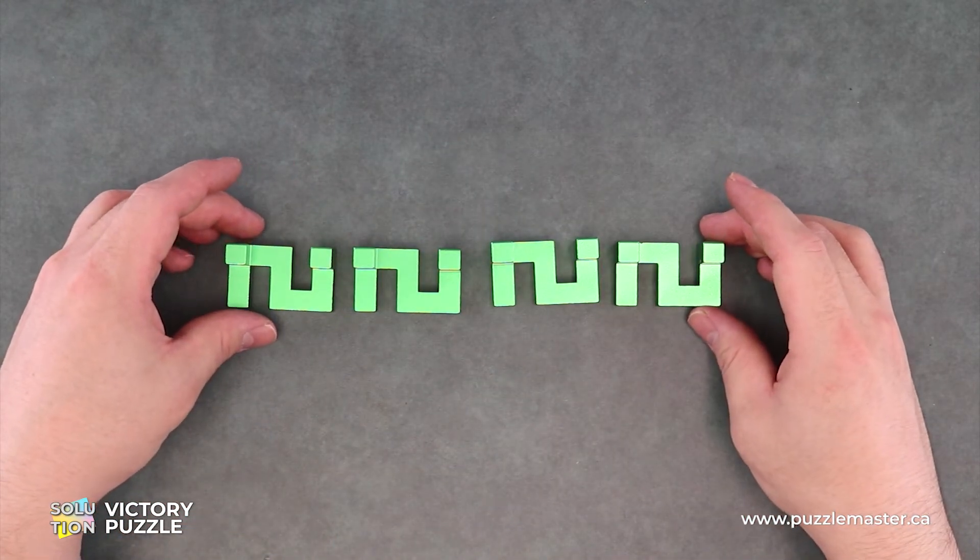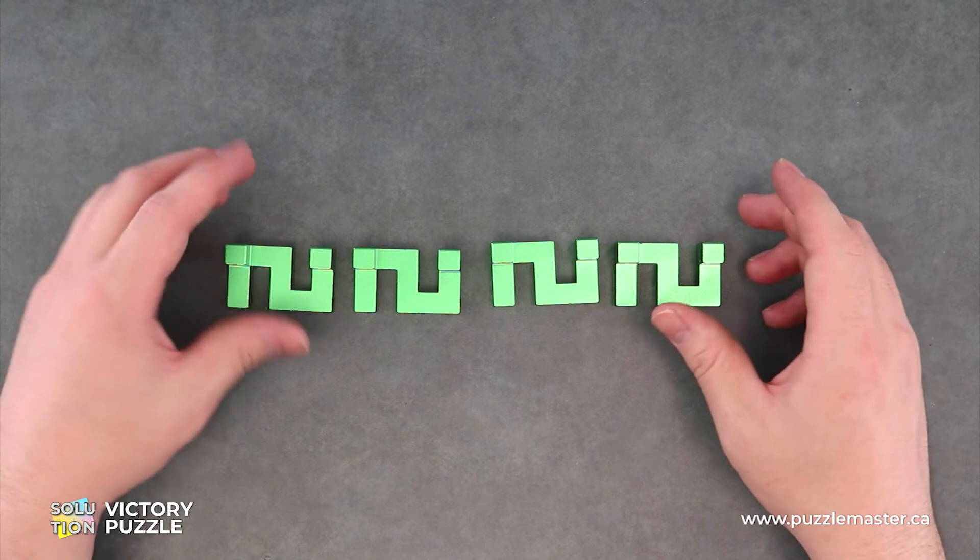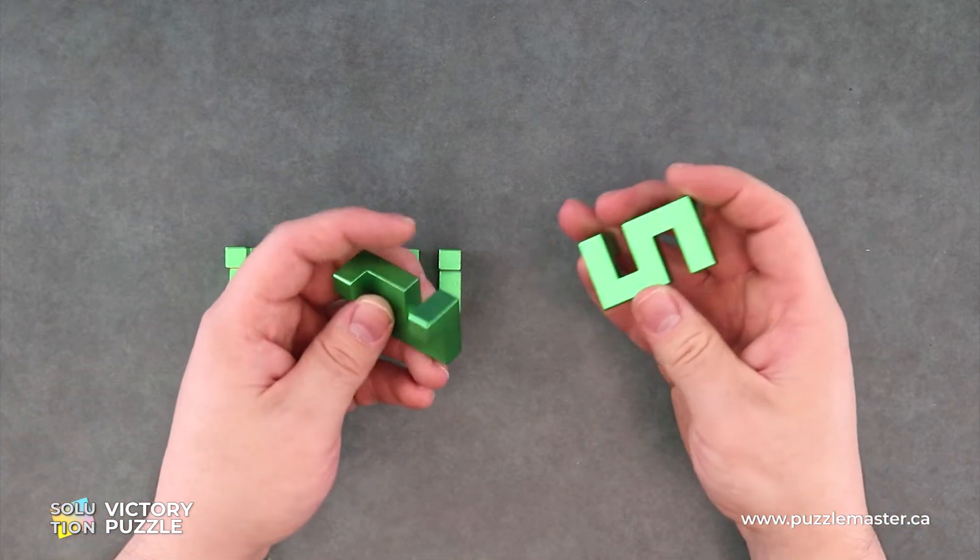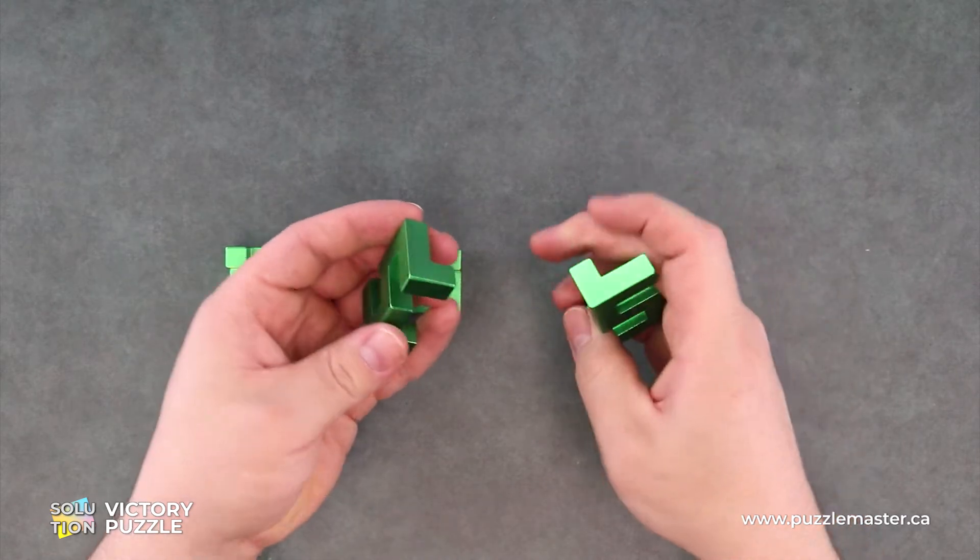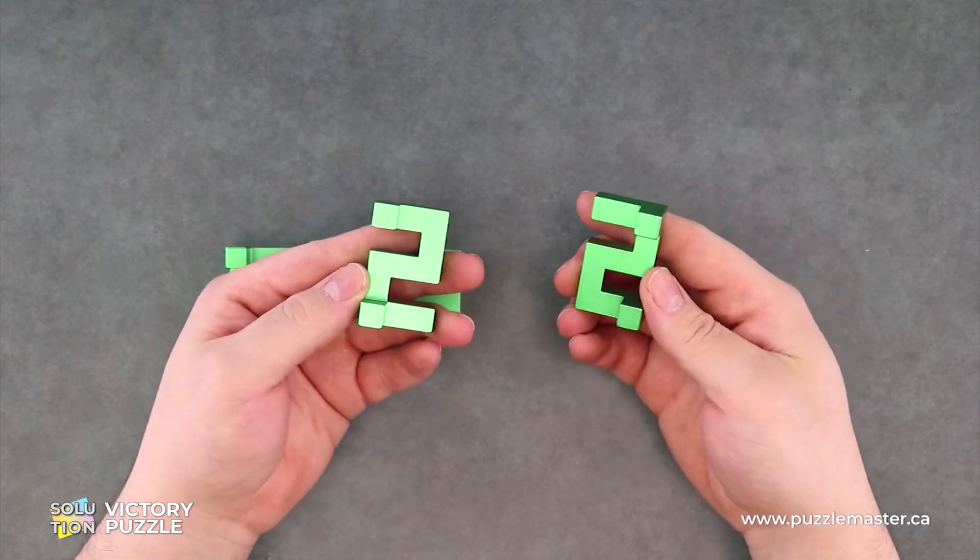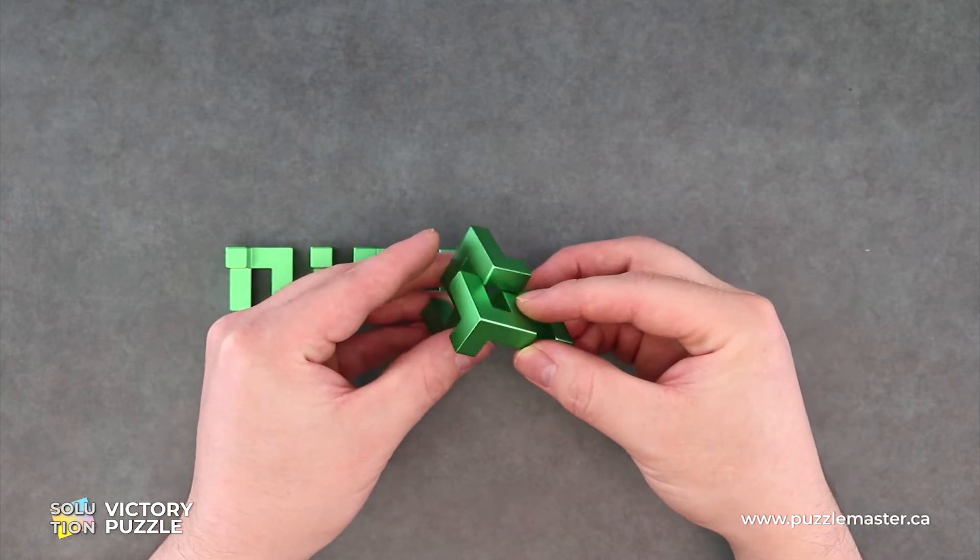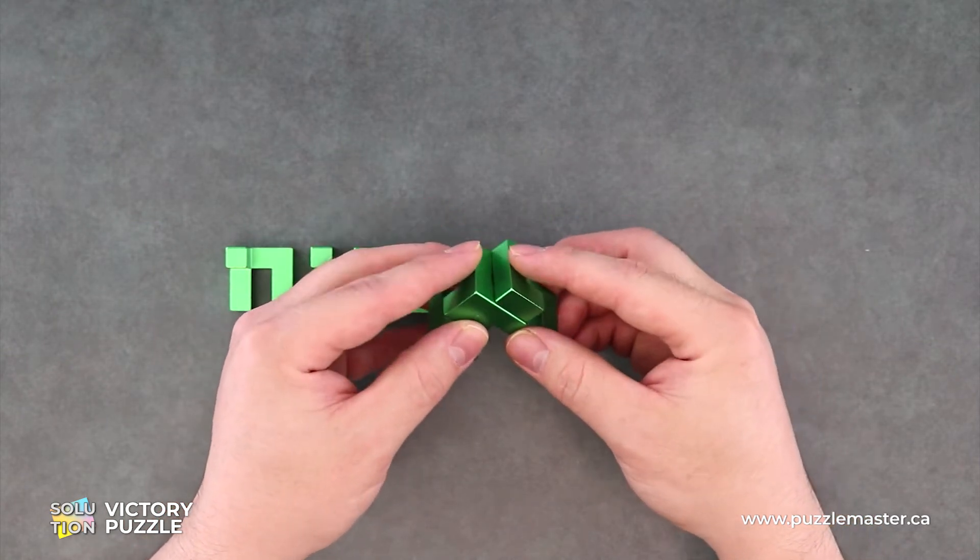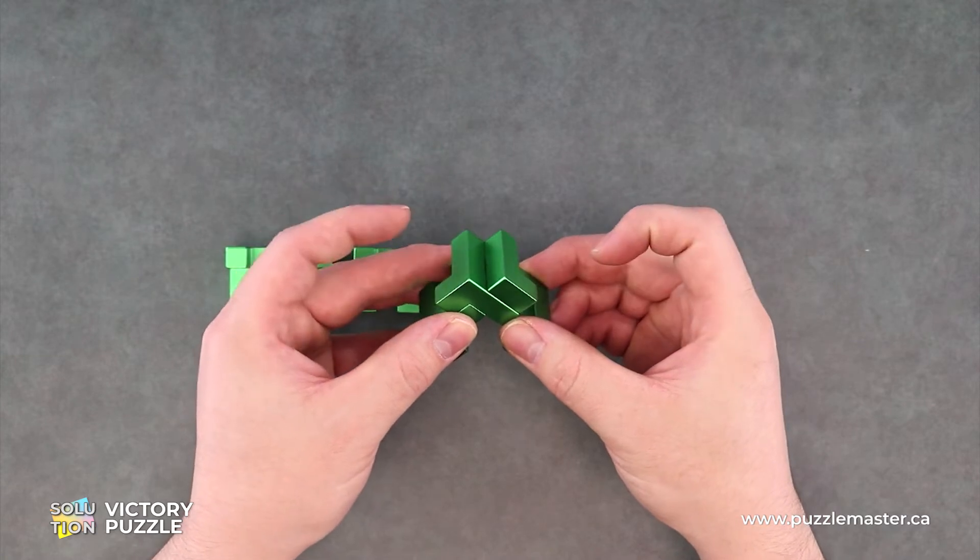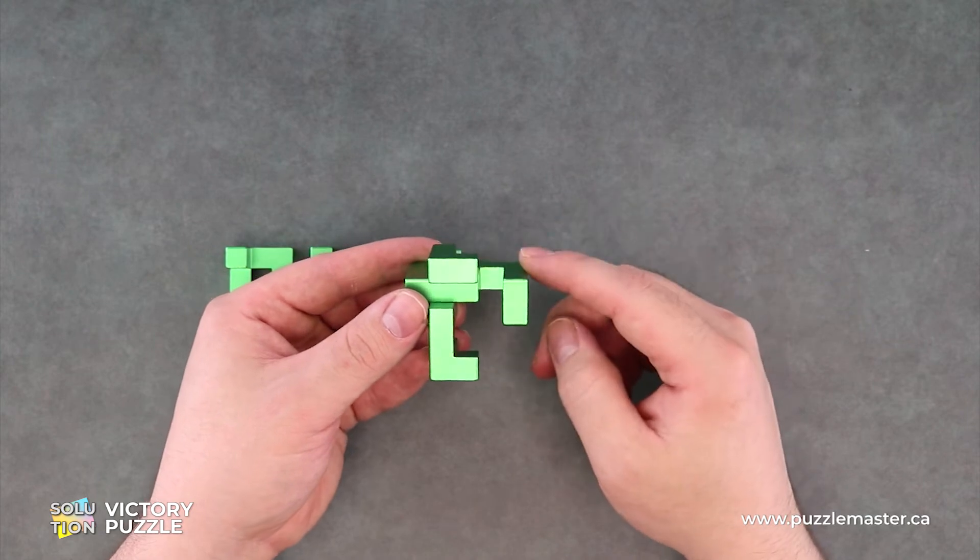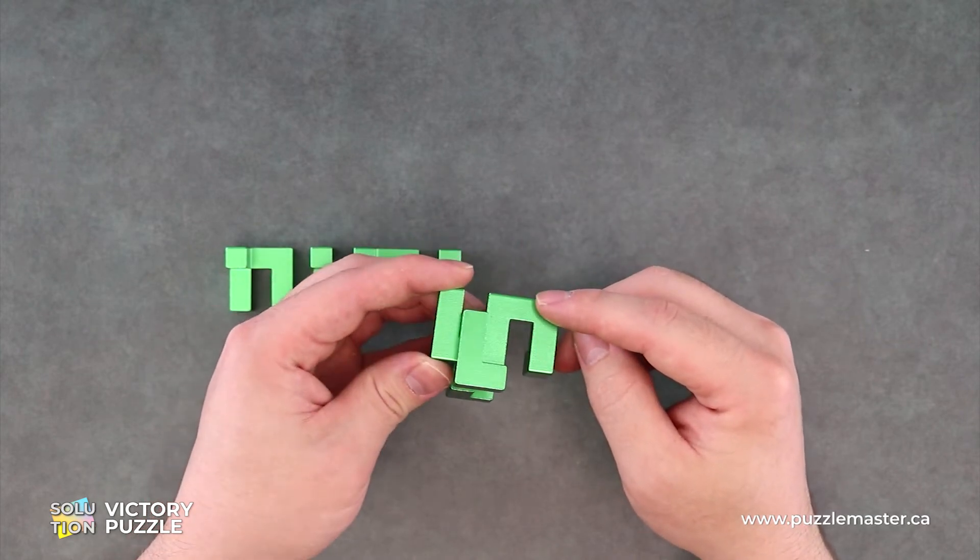From here, we can see that they are identical and we will take our first two pieces. We're going to face them together like that and into each other so that we have two L's that look like they're going the same way. We'll just let one of them drop like so.